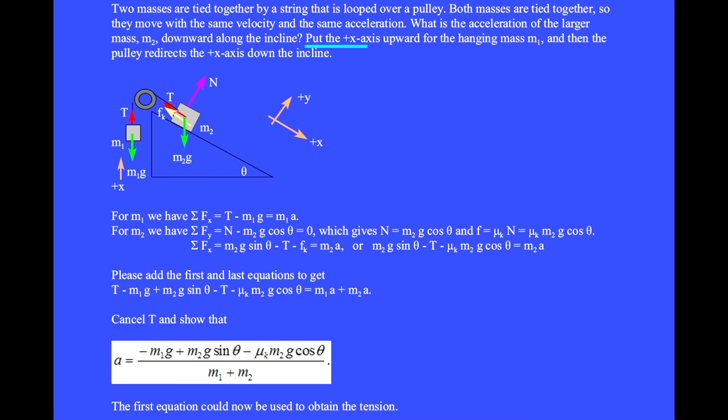Put the plus x axis upward for the hanging mass m1, and then the pulley redirects the plus x axis down the incline for mass m2. The forces that act on m1 are the upward tension T, which points in the positive x direction, and the downward negative weight m1g. The forces that act on m2 are the downward weight m2g, a normal force, a tension that points in the minus x direction, and a kinetic frictional force that points in the minus x direction.